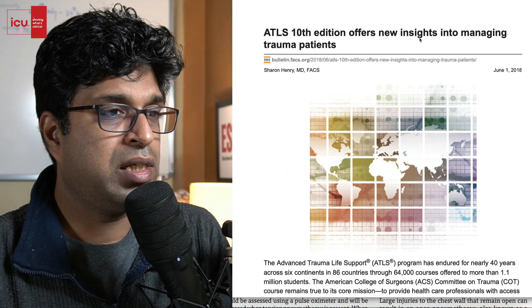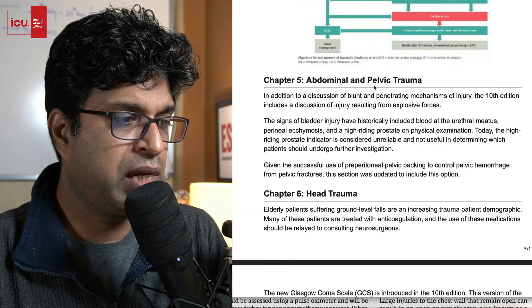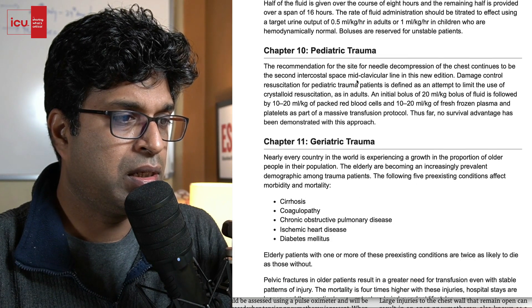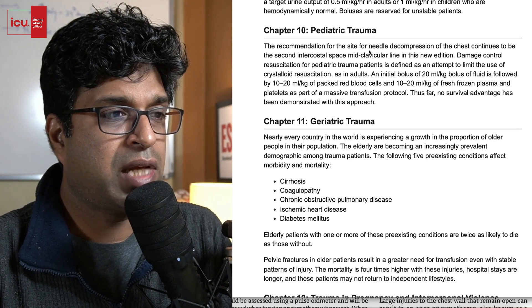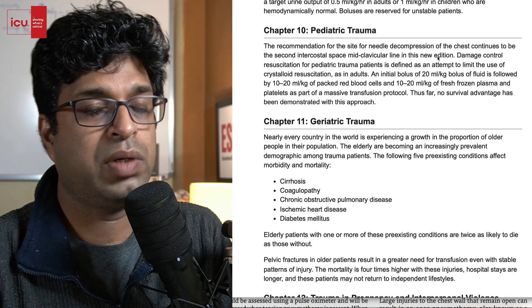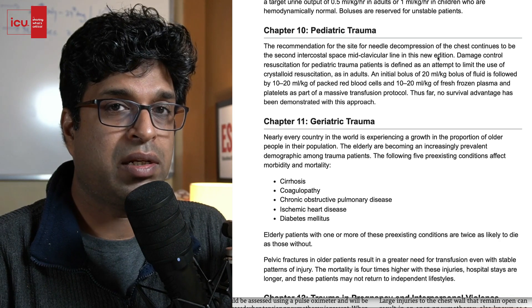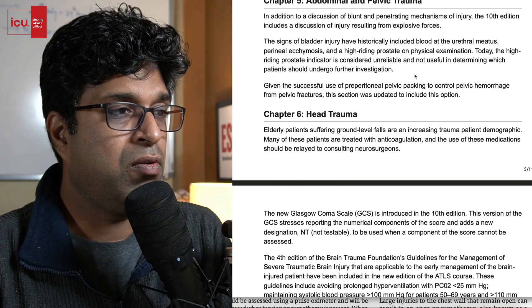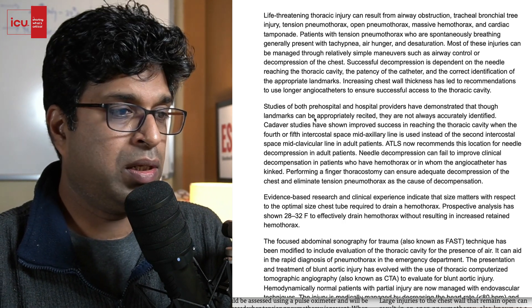I am showing you two things: the ATLS manual and the highlights from the ATLS 10th edition. You can see here in the new insights of the ATLS 10th edition — in the pediatric section, Chapter 10 on pediatric trauma — the recommendation for the site for needle decompression of the chest continues to be the second intercostal space, mid-clavicular line in this new edition. So it is very clear that for pediatric population the site for tension pneumothorax is still second intercostal space in the mid-clavicular line.